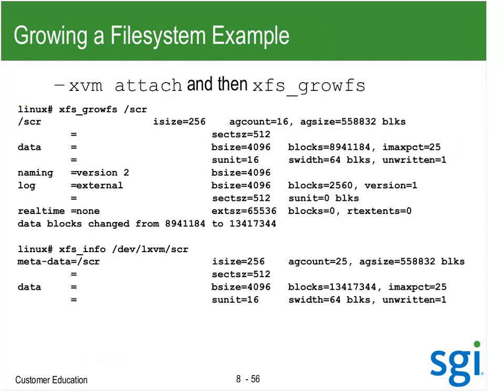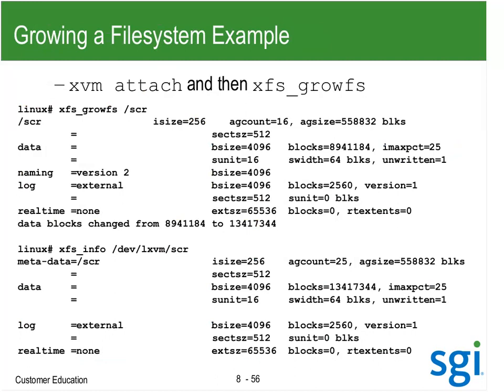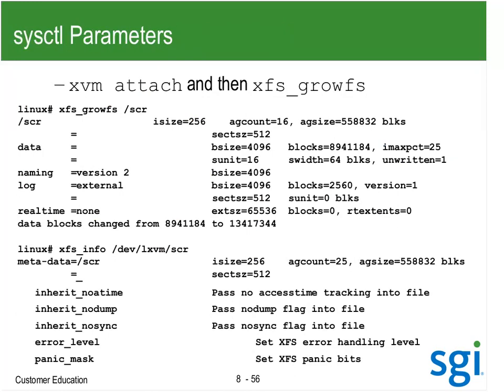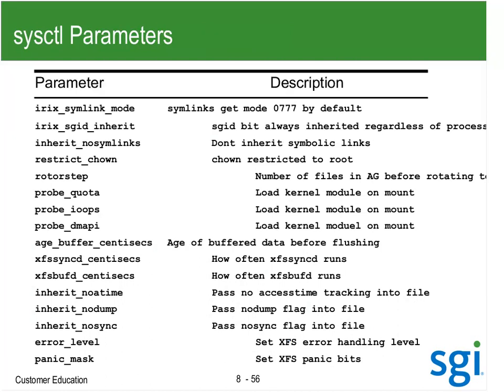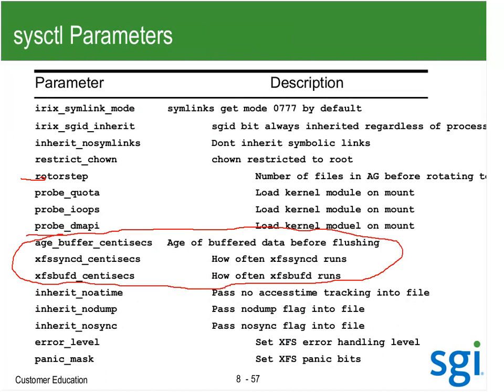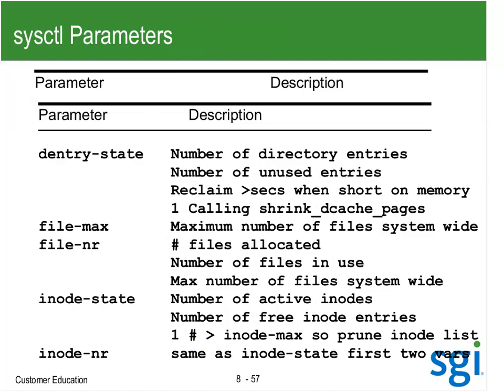The lab had you grow a file system. You stripe four more slices and attach them to the existing stripe group — you've got to insert a concat to do that. Then you do your growFS and see the file system growing. There are sysctl parameters including rotor step. I really do not adjust the flush daemon sysctl parameters on XFS.